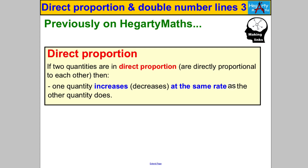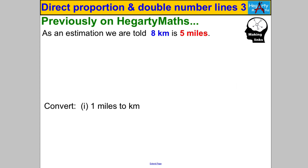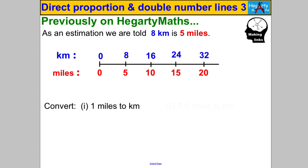I want you to pause the video and check you can do the following. Using a ratio or a double number line — kilometres and miles — you know that 8 kilometres is 5 miles. To work out what one mile is worth, you divide by five, so 8 divided by 5 gives you 1.6 kilometres per mile.